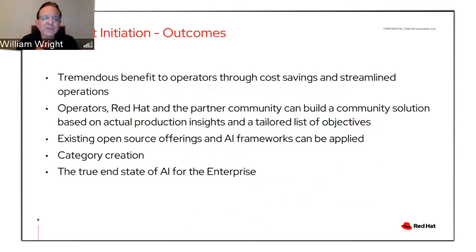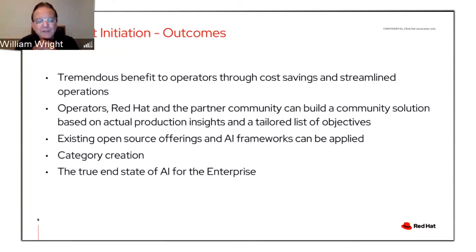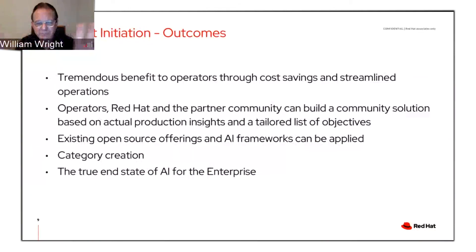The outcomes for this project are quite a few. There's a tremendous benefit to operators through cost savings and streamlined operations. Operators, Red Hat, and the entire partner community can come together to build the solution based on production insights and specific objectives. From an R&D perspective, it becomes a kind of petri dish where everybody can come together and apply new creative ideas that will ultimately find their way into mobile networks. Existing open source offerings and AI frameworks can be applied — we don't have to rebuild everything — and it creates a new category: that overarching single AI instance spanning different countries, regions, and business divisions, becoming the true end state for AI for the enterprise.